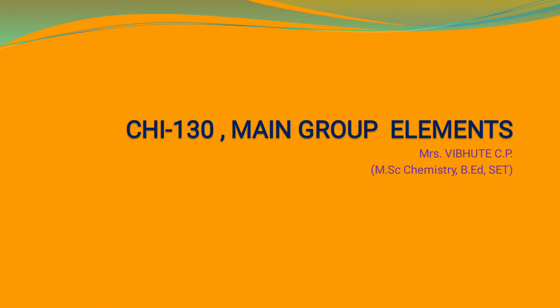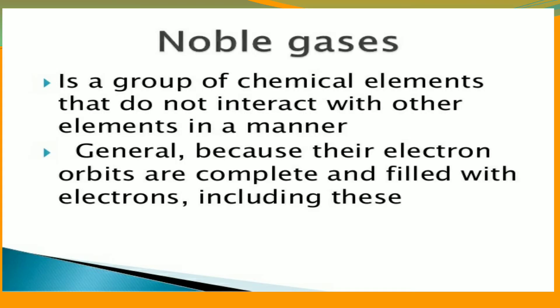Welcome dear students. Today we are going to learn the CHI 150 course of MSc first year, that is main group elements. Today's topic is noble gases. Last time we learned about the structure and bonding of xenon compounds — xenon fluoride and xenon oxide compounds. Today we learn some introduction about the noble gases and the clathrates.